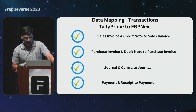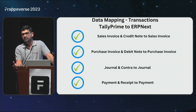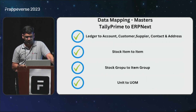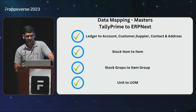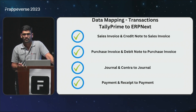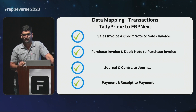There are two types of components: masters, transactions, and reports. We mapped the ledger accounts of Tally to customers, suppliers, contacts, and addresses, then stock items and other components. Similarly, we mapped transactions. For example, in ERPNext we have only payment entry, but in Tally there are separate entries for payment and separate entries for receipt — so we tried to map all those kinds of transactions.